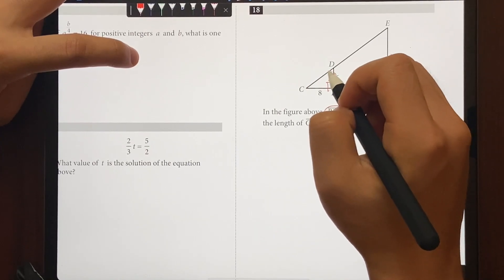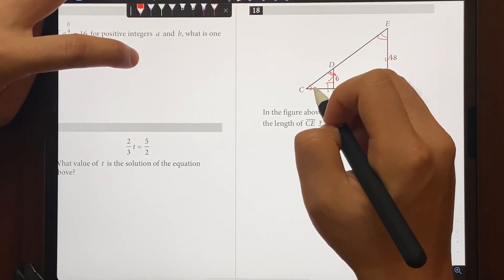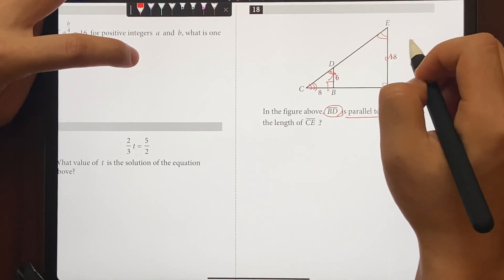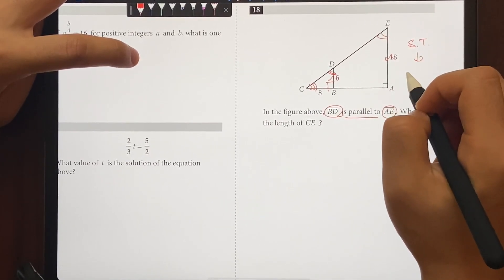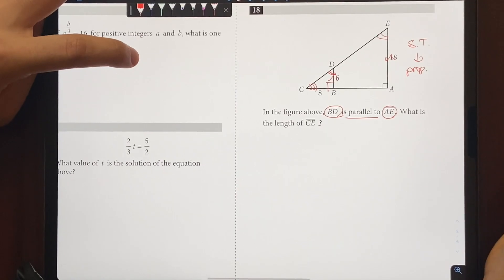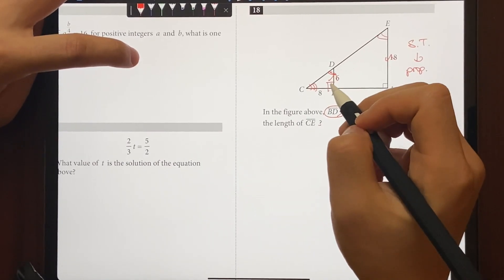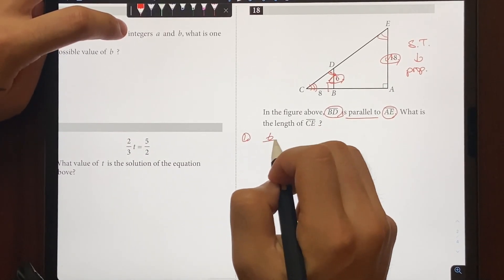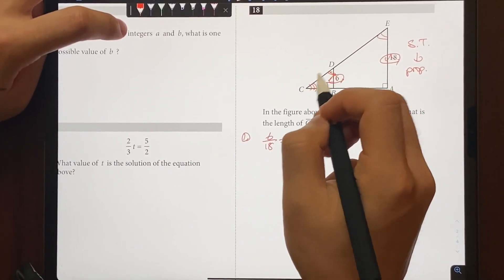So same set of angles, that means it's going to be a similar triangle, which means that their side lengths are going to be proportional. So we can use proportion here. We know that 6 and 18 are going to be proportional. So first, we can do 6 over 18 is equal to CD over CE.